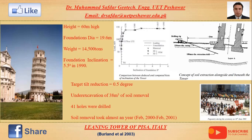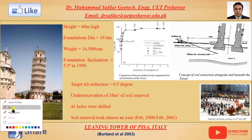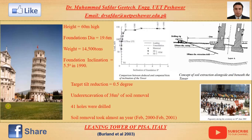Today our topic would be understanding the Leaning Tower of Pisa — its settlement, consolidation behavior, and how it was controlled. It is located in Italy. In the Italian language, 'Pisa' is known as marshy soil, which is a combination of clay, mud, and wet sand. We can clearly see that tilting has occurred in this tower.